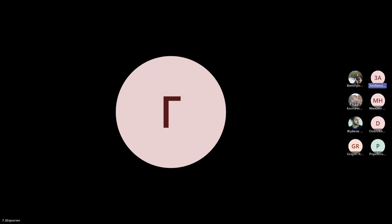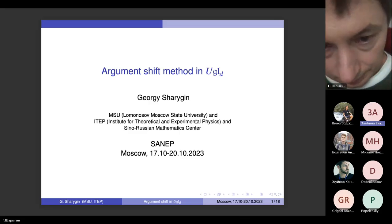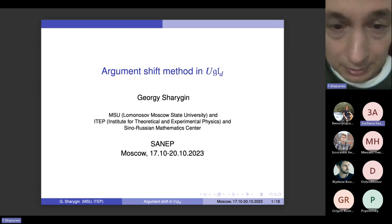So we proceed to our second talk. It will be given by Georgi Igrievich Sharygin: Argument shift method in UGLD. I would like to begin with expressing my gratitude to the organizers for granting me this opportunity to make a talk, and although it is not quite related to the elliptic problems, I hope it will be interesting to the most part of the public.